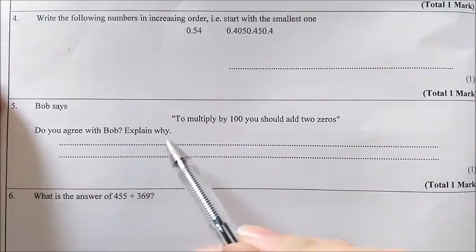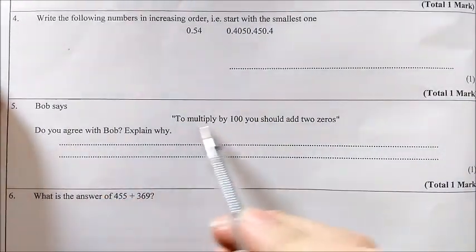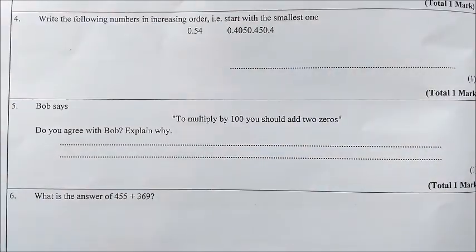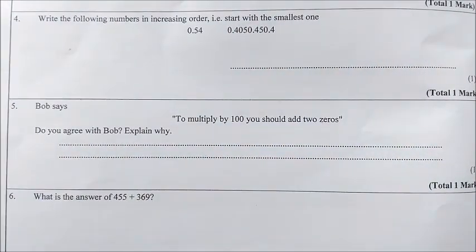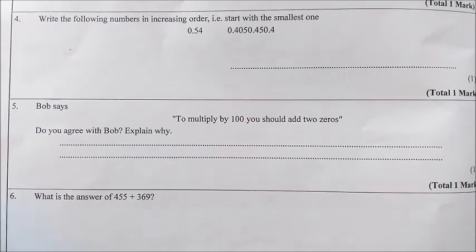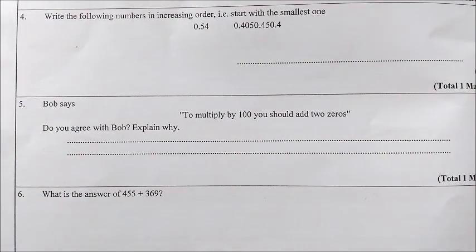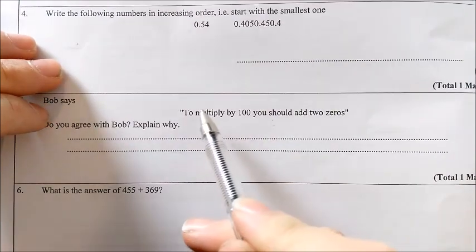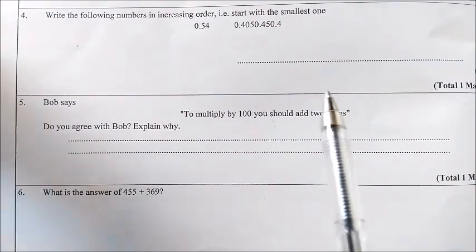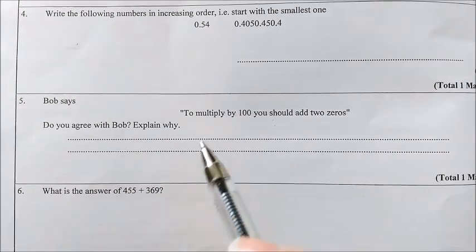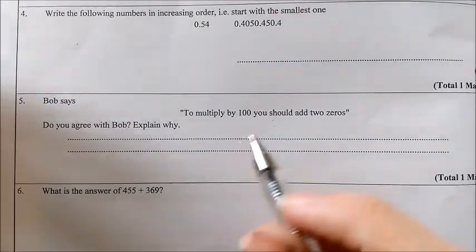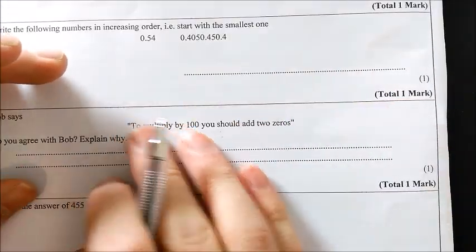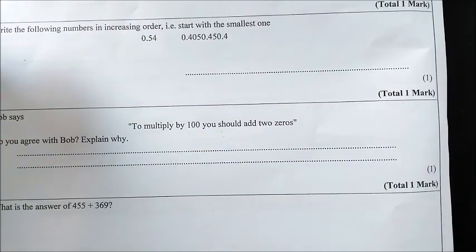Question five: Bob says, to multiply by 100, you should add two zeros. Do you agree with Bob? Explain why. Well, with this sort of question, I go by a three test rule. To test this out, I'm going to do three examples and see if it works. I'm going to try and pick three different examples that work for it.